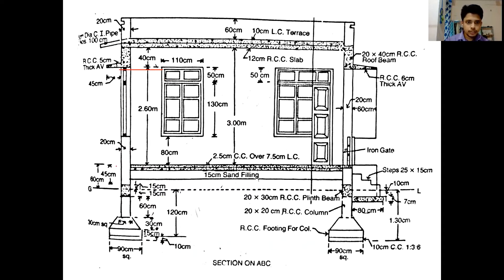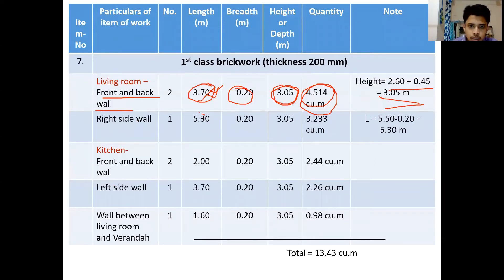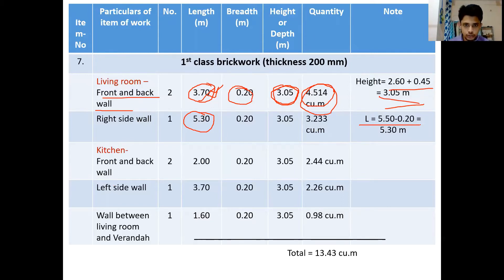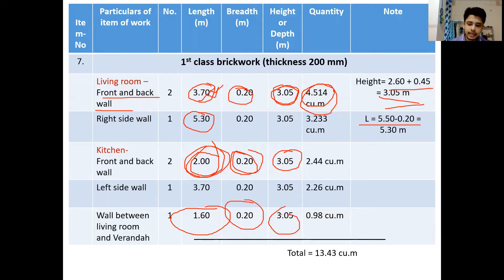From the sectional drawing, the height is 2.6 m up to that point and then 0.45 m for the plinth wall. On the right side wall we take 5.3 m — the room dimension is 5.5 m but we subtract 0.2 m for the column inside, giving 5.3 m. Similarly in the kitchen the wall length is 2 m, with the same thickness and height. On the left side and in the veranda, the length and other dimensions remain the same; multiplying length, breadth, and height gives the total volume which is then summed.